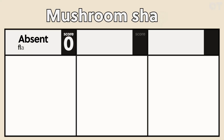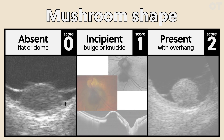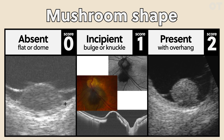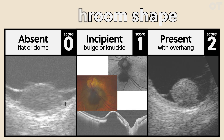For the mushroom shape category: on the left, you see a dome-shaped lesion on ultrasound, so that scores zero. In the middle, on OCT, you can see an incipient mushroom shape — a bulge or a knuckle coming through — so that gets a score of one. And on the right, you've got an obvious mushroom-shaped melanoma, and that gets a score of two.